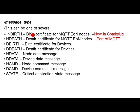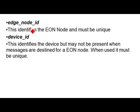These are the message types: we have node birth and node death, device birth and device death, node data and device data, node commands and device commands, and state. The edge-of-network node ID must be unique — it must define the edge-of-network node uniquely. And the device ID needs to be unique on the EON node.